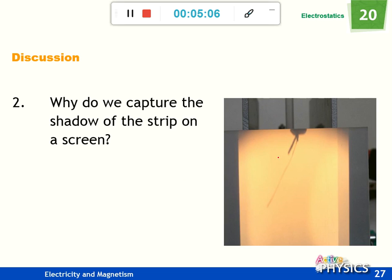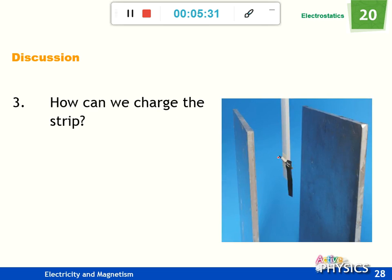Question 2: Why do we capture the shadow of the strap on a screen? Because we want to measure the angle in a more accurate way. We cannot touch it, and it's very dangerous because the voltage difference between the metal plates is 2 kV. Question 3: How can we charge the strap? Very easy—touch one of them. For example, touch the positive plate and it will be positively charged.